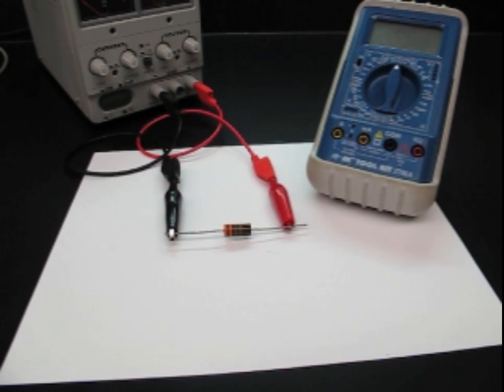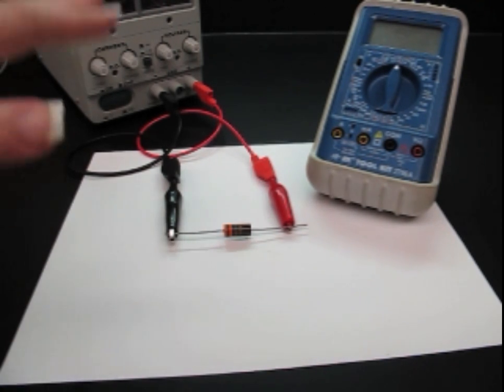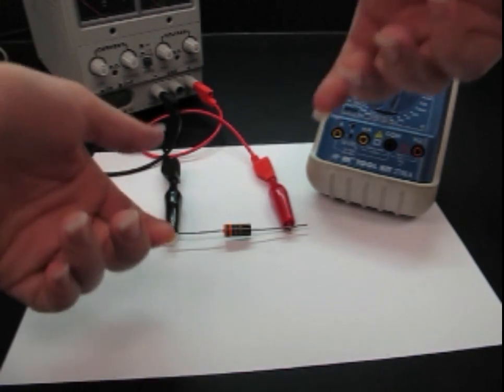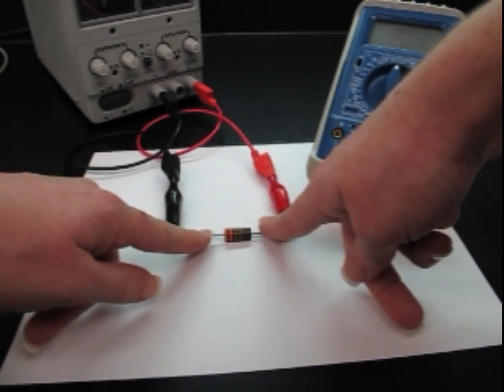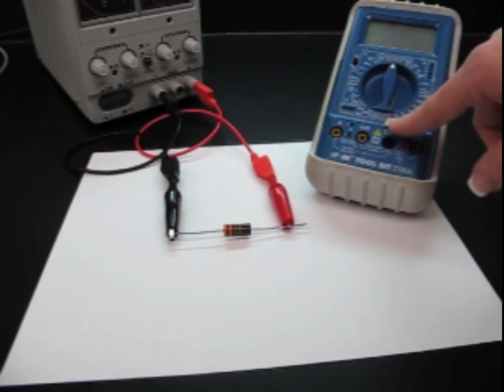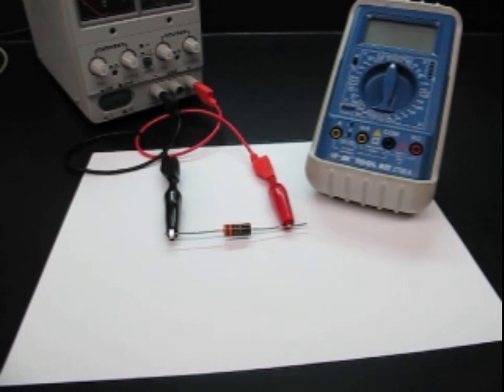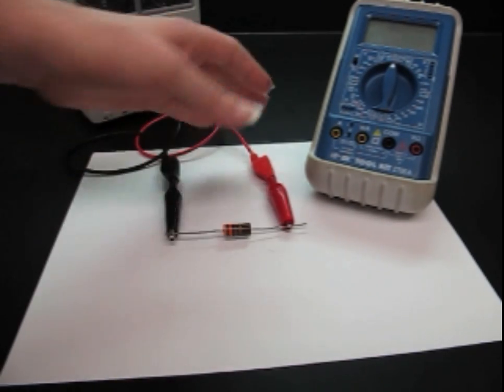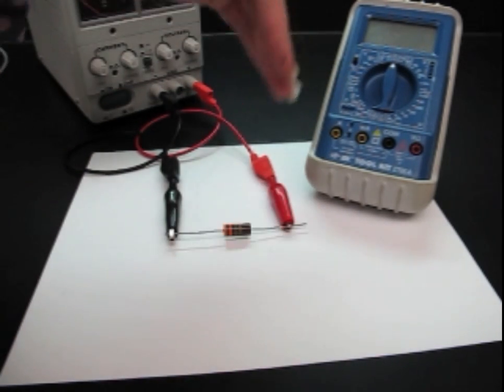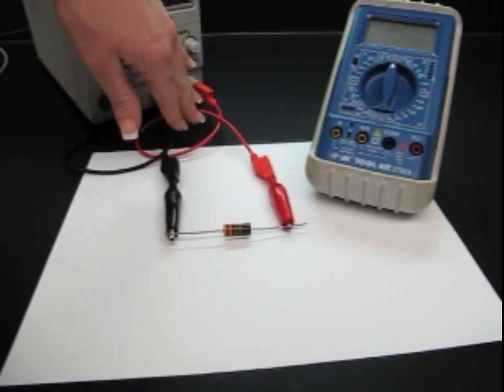So the next thing I want to show you is how to take a current reading. Now the difference between voltage and current is how you interact with the circuit. So for taking a voltage reading, we take our reading in parallel with our system. So we kind of piggyback on and then we go straight to our multimeter. But with reading current, we have to break our circuit and read and have our multimeter jump into it so it is in series with our circuit.